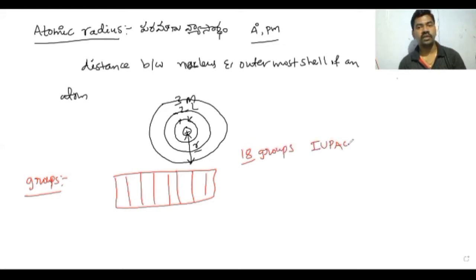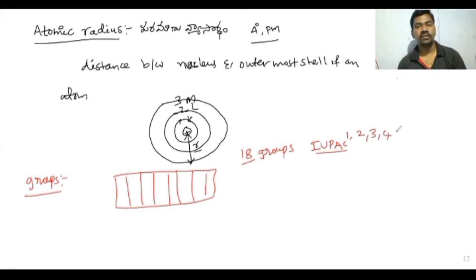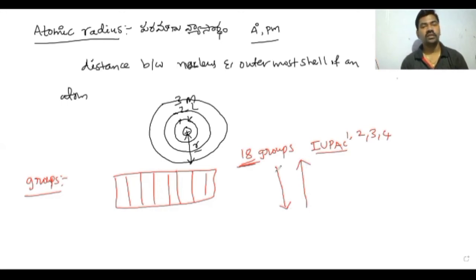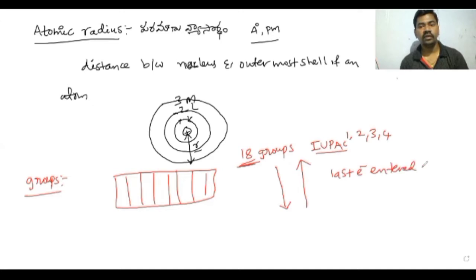As we go down the group — in a particular group — the atomic radius increases. As we go down the group, the atomic radius gradually increases, because the last electron enters into a new shell each time.